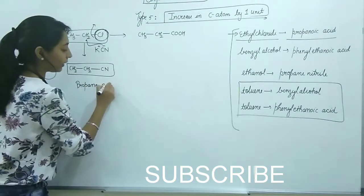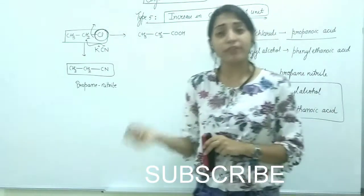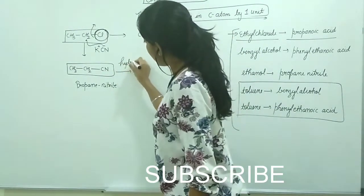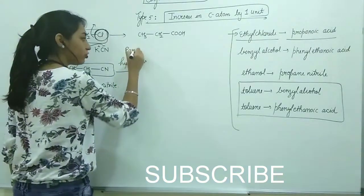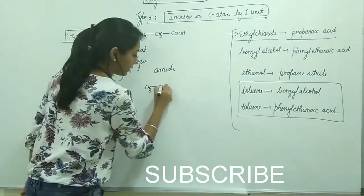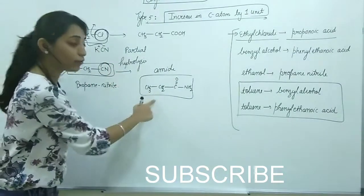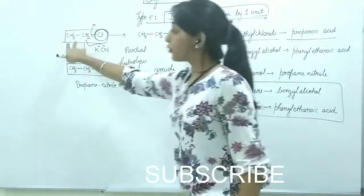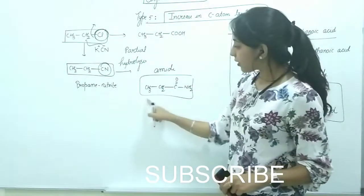We get CH3CH2CN, which is known as propane nitrile. One very good thing you'll learn in the amines chapter: if we do partial hydrolysis of cyanide, it's converted to amine (CH3CH2CH2NH2). This might be a question: how to convert ethyl chloride to this compound. Count the carbon atoms - two here, three here.